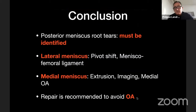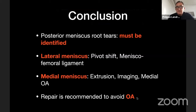In conclusion: the first key message is that posterior meniscus root tears must be identified — it is a frequent misdiagnosis. Unfortunately, when missed or dismissed as unimportant, we see patients two, three, or four years later with early osteoarthritis that could have been avoided if the diagnosis had been made earlier. A high level of clinical suspicion should be our behavior when facing knee pain or knee dysfunction.